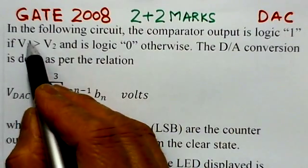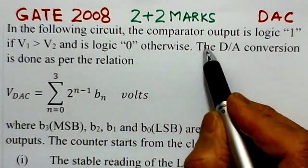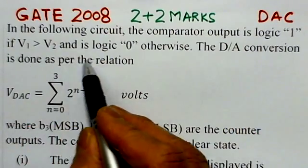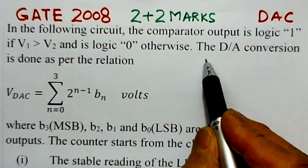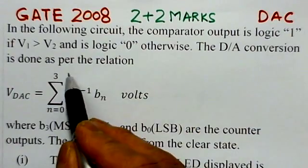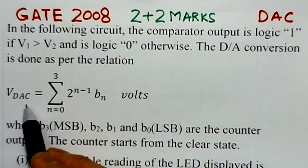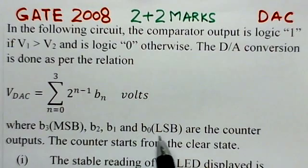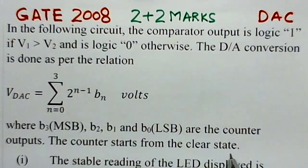We will read out the problem here. In the following circuit, the comparator output is logic 1 if V1 is greater than V2 and is logic 0 otherwise. The D to A conversion is done as per the relation VDAC equals the summation, where b3 is MSB, b2, b1, b0 are the counter outputs. The counter starts from the clear state.